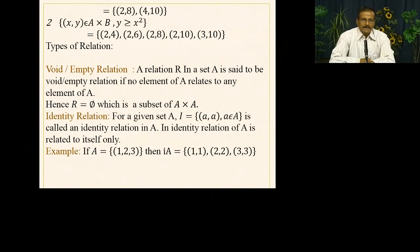In the collection where certain elements are given, we will have pairs like (2,8), (4,10). In another way, we define a relation where y is greater than or equal to x squared. In those elements: 2 maps to 4, 2 maps to 6, 2 maps to 8, 2 maps to 10, and 3 maps to 10. Because y ≥ x² means for x=2, y can be 4, 6, 8, or 10.